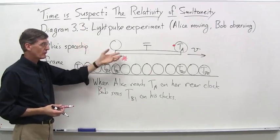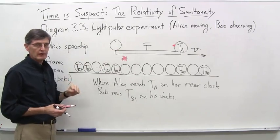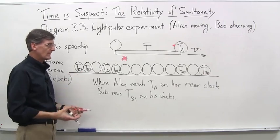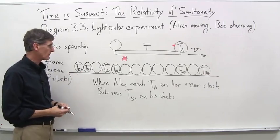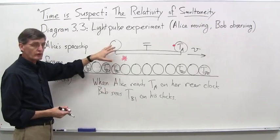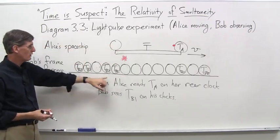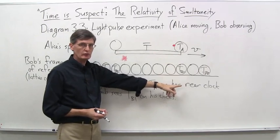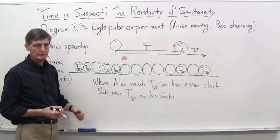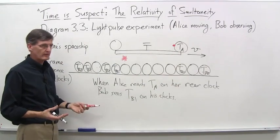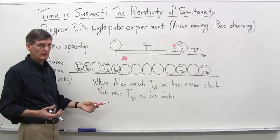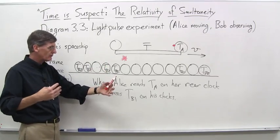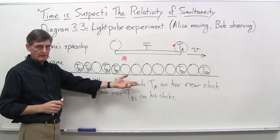Alice thinks that both, according to her clocks, both the light pulse hits were simultaneous. Both her clocks read T sub A at that point. Bob is saying, Alice, you messed up on your synchronization of your clocks, because clearly by my clocks, this first photon hit, light pulse hit, back in diagram 3.2, occurred at TB1. The second light pulse hit occurred at TB2. My clocks are synchronized. It's your clocks that are messed up. Meanwhile, Alice is saying, uh-uh, my clocks are perfectly synchronized. I see both the photons, both the light pulses hit at T sub A. They're simultaneous. My clocks are synchronized. It's your clocks, Bob, that are messed up.